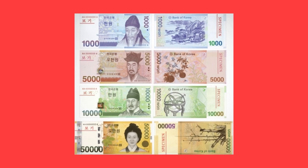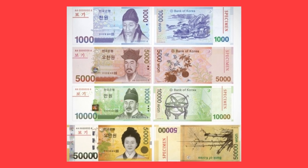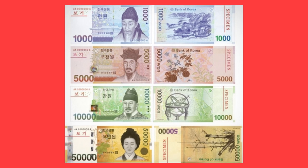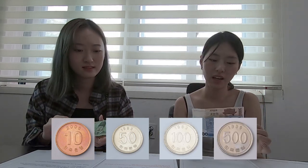There are four different types of bills in Korea: the 1,000 won, 5,000 won, 10,000 won, and 50,000 won. There are also four kinds of coins: 10 won, 50 won, 100 won, and 500 won. These currencies are printed with Korea's historical figures, fauna, and flora.